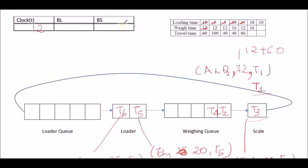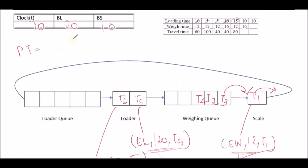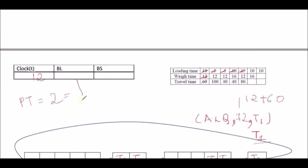Now let's calculate loader busy time BL and BS. Past time is 12 minus 10 = 2. In those 2 minutes, both loaders were busy and the scale was busy. So BL gets 2×2=4 added, giving cumulative 20+4=24. BS gets 2 added, giving 10+2=12.